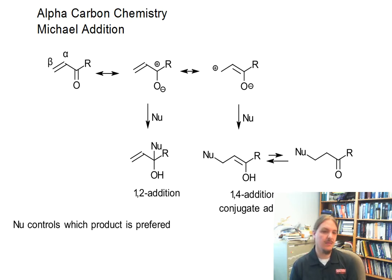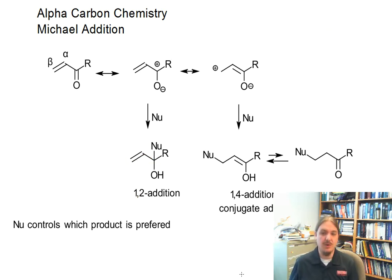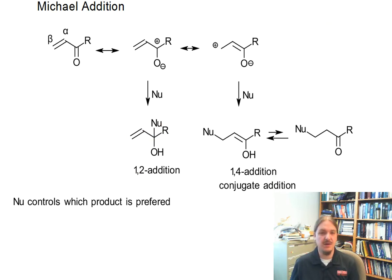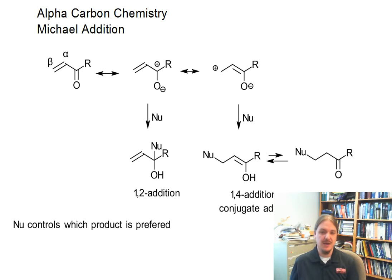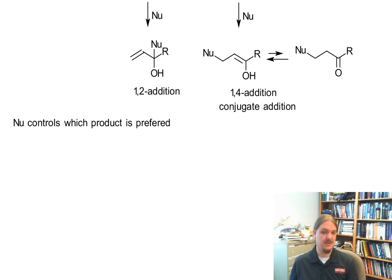In this video, I'm going to talk some more about the Michael addition reaction, focusing on the different types of nucleophiles and which ones prefer 1,2 addition reaction — normal nucleophilic addition straight to the carbonyl group — and which ones prefer 1,4 conjugate addition.